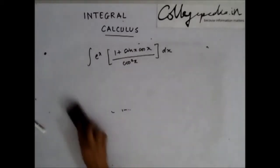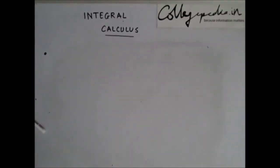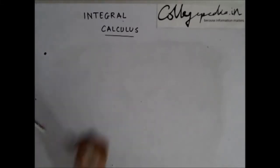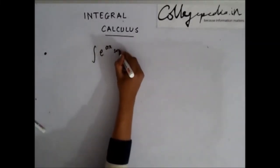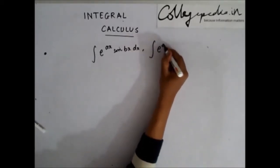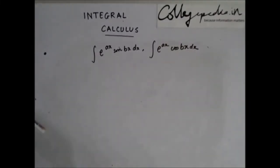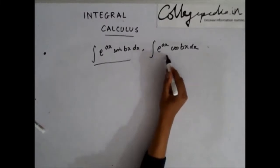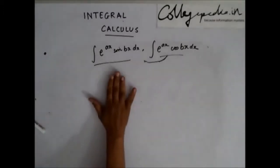Now we'll solve another type of question which involves exponential with a trigonometric function attached. We'll discuss integrals of the form e to the power ax·sine(bx) dx, or integral of the form e to the power ax·cos(bx) dx. Let's first try solving this — it's very similar, so I'll urge you to try solving the cosine form on your own after seeing how to solve the sine form.